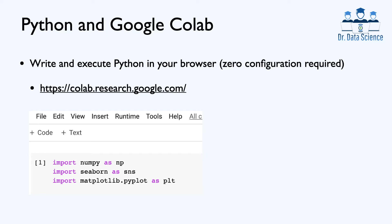You also don't have to install any packages. In order to use Google Colab, you have to go to colab.research.google.com, or you can go to your Google Drive and create a notebook, which is very similar to a Jupyter notebook and allows you to write code and run each cell. Please open up Google Colab and type in these three lines: import numpy as np, import seaborn as sns, and import matplotlib.pyplot as plt.